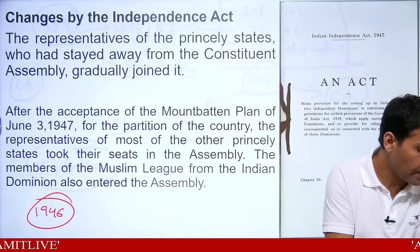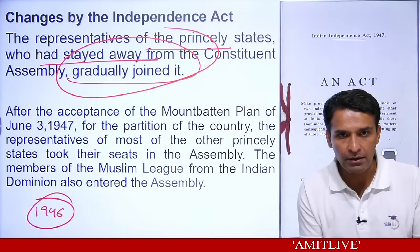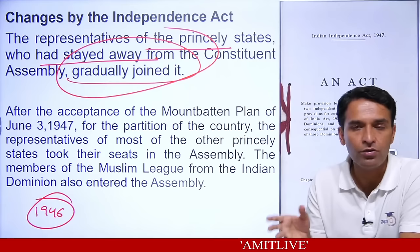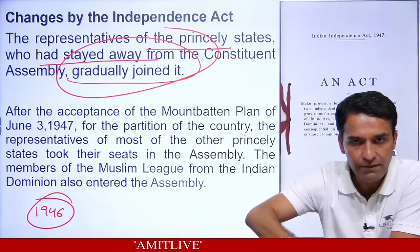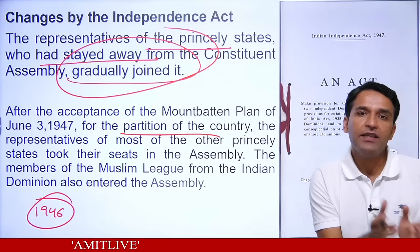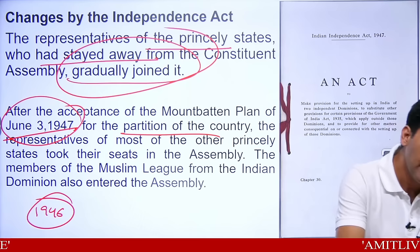On June 3, 1947, the Mountbatten Plan was announced — partitioning the country — which the Indian National Congress and Muslim League agreed to. British Parliament passed the Indian Independence Act 1947 on 18th July 1947. This act made three important changes: first, the assembly was made a fully sovereign body; second, it could frame any constitution without British interference and could abrogate any British law applied to India.